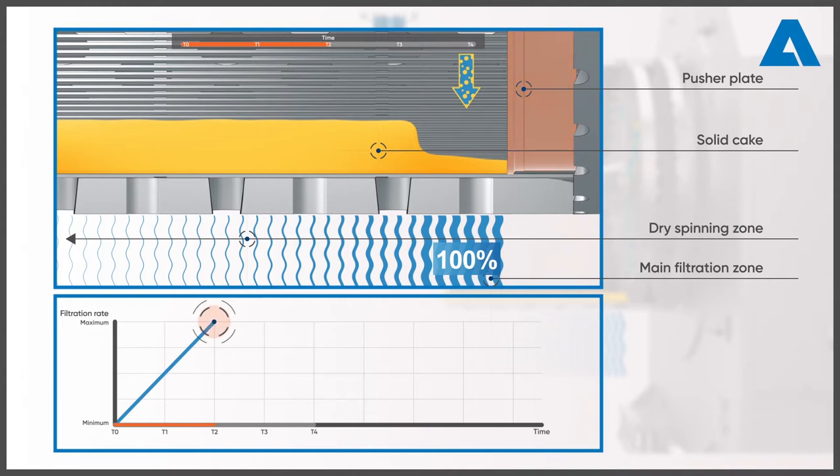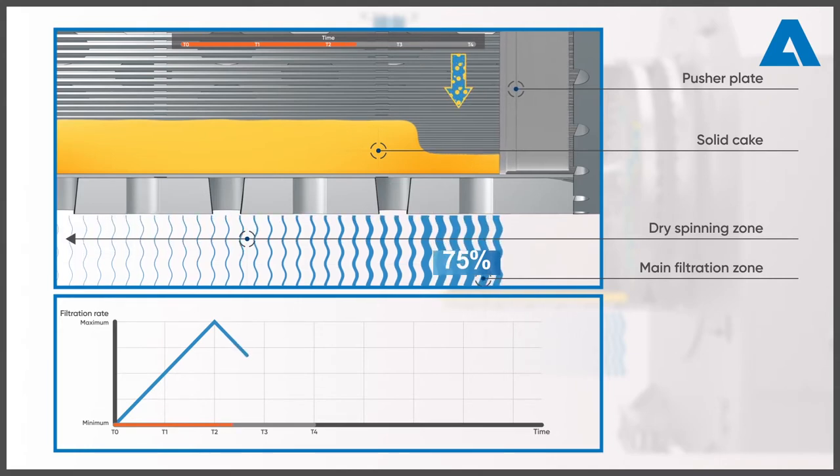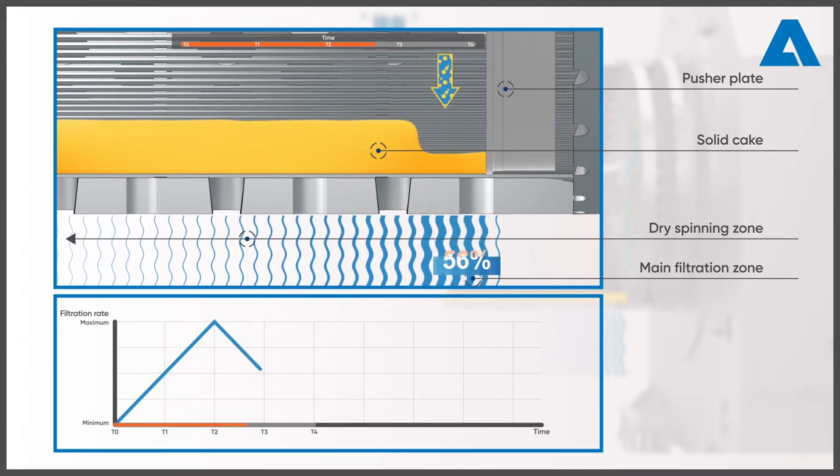The pusher plate has arrived at its far right position and the moment of maximum filtration is reached. The pusher plate now changes direction. Now there is no free screen area in the main filtration zone. The screen is covered with a thin layer of solid cake.